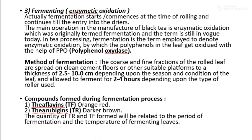Method of fermentation: the coarse and fine fractions of the rolled tea are spread on clean cement floors or other suitable platforms to a thickness of 2.5 to 10 cm, depending upon the season and condition of the leaf, and allowed to ferment for 3 to 4 hours depending upon the type of roller used.